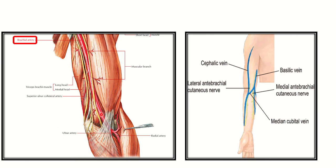Here we can see the brachial artery. In the lower part of the antecubital fossa, the brachial artery divides into the radial artery and the ulnar artery. In this picture, the brachial artery starts in the upper part and going down, in the lower part of the antecubital fossa it divides into two arteries — the radial artery and the ulnar artery.